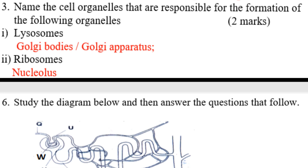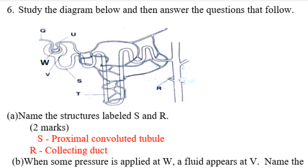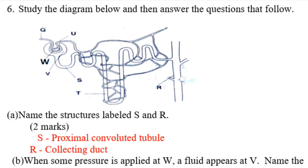Number six: Study the diagram below and answer the questions that follow. You can see parts labeled q, u, and r. Biology learners should know this structure — it is found in Form 2 biology and is well drawn there. You should know all the parts and their functions, and be able to draw and label all parts yourself. Name the structures labeled s and r: s is the proximal convoluted tubule; r is the collecting duct.